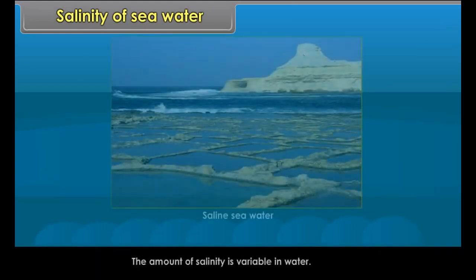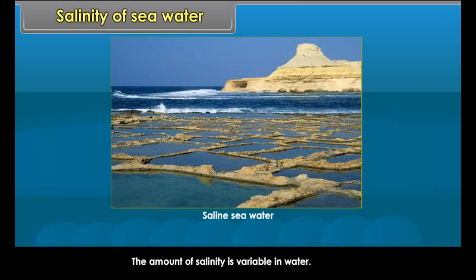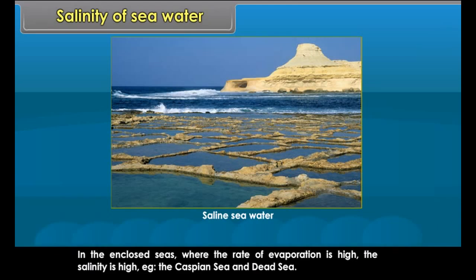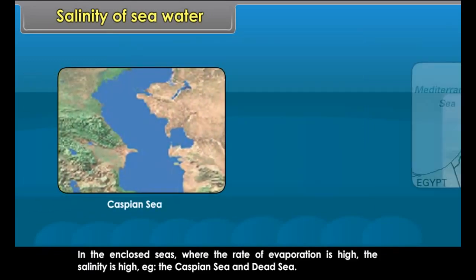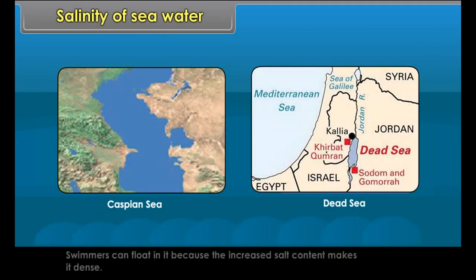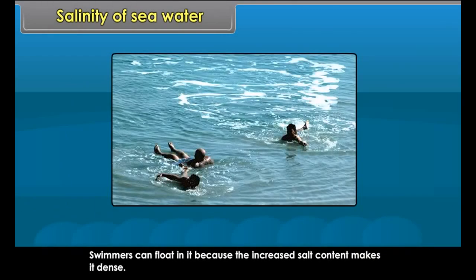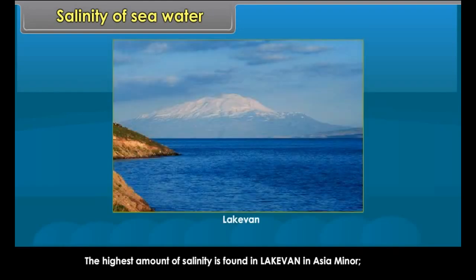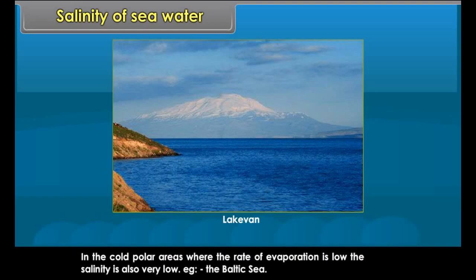The amount of salinity is variable in water. In enclosed seas where the rate of evaporation is high, the salinity is high — for example, the Caspian Sea and the Dead Sea. Swimmers can float in it because the increased salt content makes it dense. The highest amount of salinity is found in Lake Van in Asia Minor.